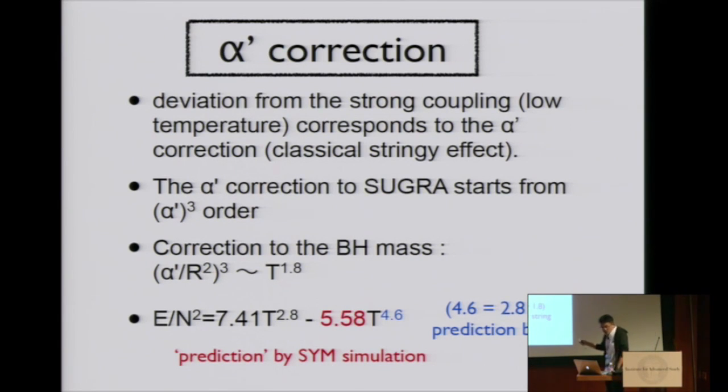We should take a cubic power. This quantity in a supergravity limit can be estimated just looking at the metric. We know that this combination is T^0.6. So we have cubic power, so we have T^1.8. The leading is T^2.8. So we add 1.8 to 2.8, then we get 4.6. This is simply power counting.